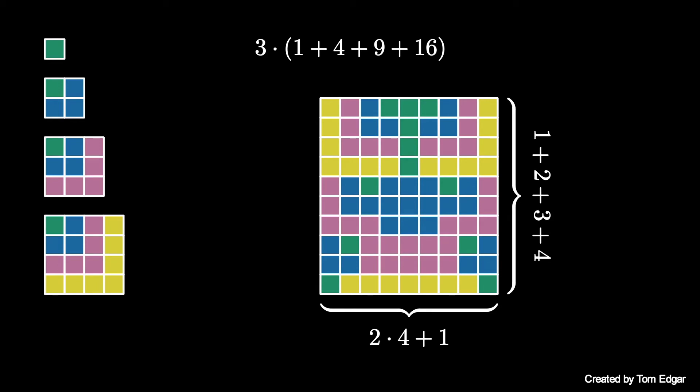Therefore we see that 3 times the sum of the first four squares is 2 times 4 plus 1 multiplied by the sum of the first four positive integers.